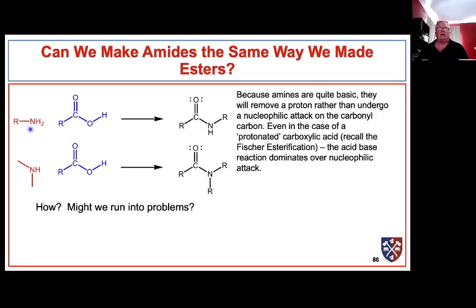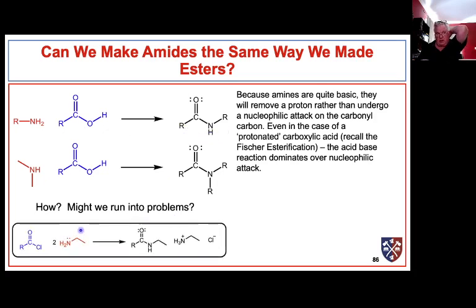We end up just doing an acid-base reaction. The amine is a strong enough base that the acid-base reaction goes to completion and is close to irreversible, so we don't have access to the pathway needed to make the amide. Luckily we can make amides from other carboxylic acid derivatives, for example an acid chloride.